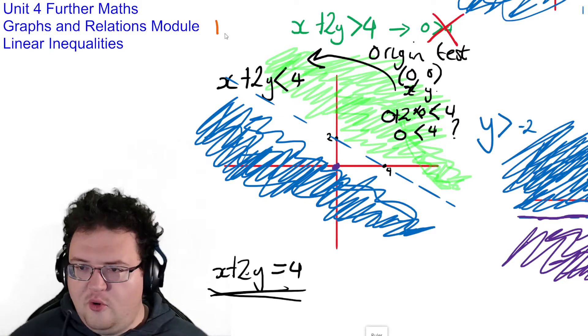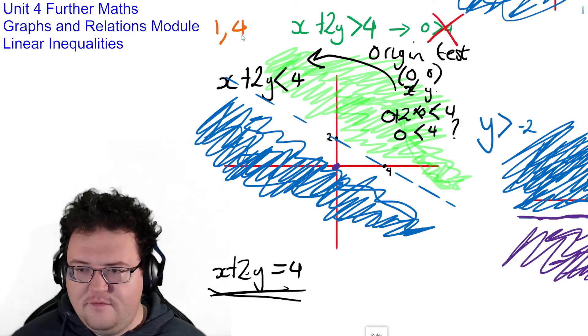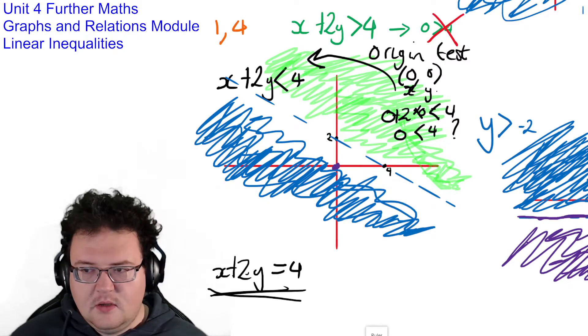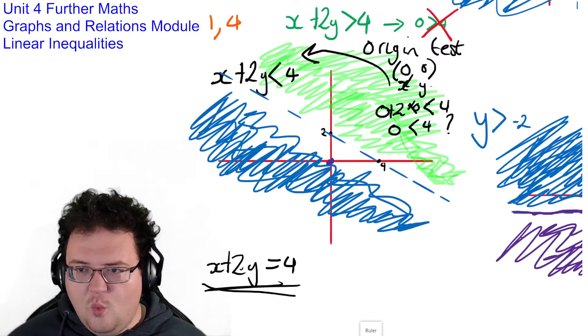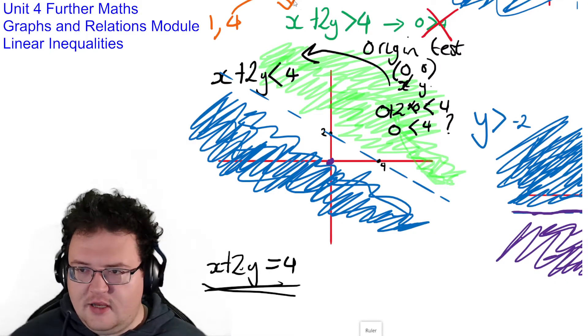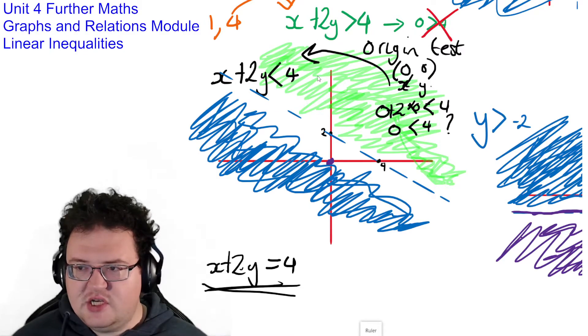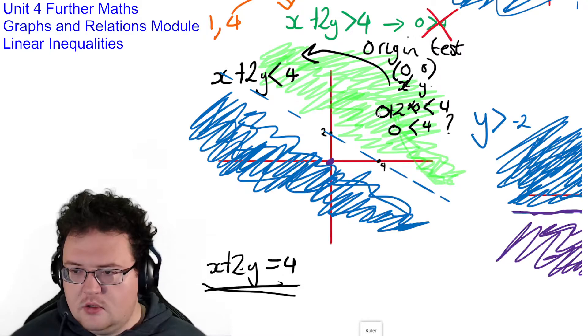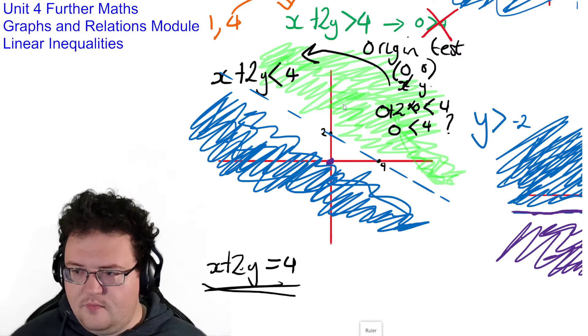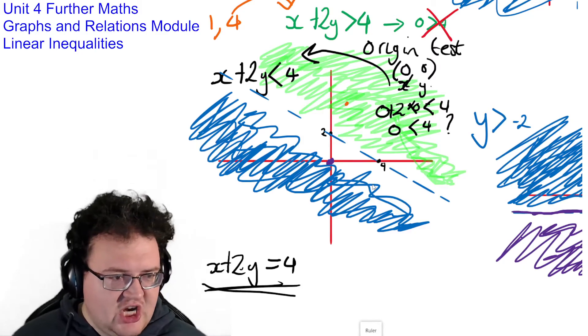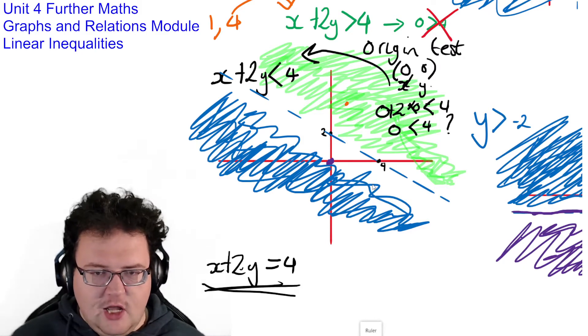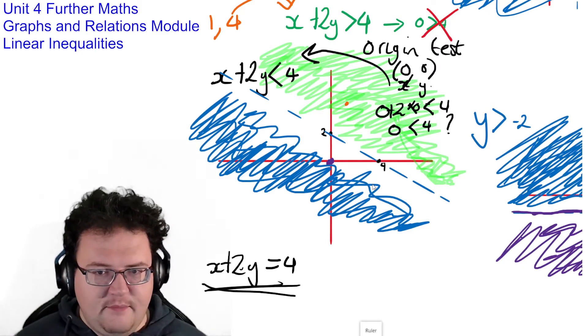I'll prove a point. What about the point 1, 4? If I put 1, 4 into here, 1 plus 2 times 4 is 9. Is 9 greater than 4? So clearly, I shade whichever side of my line includes that point.